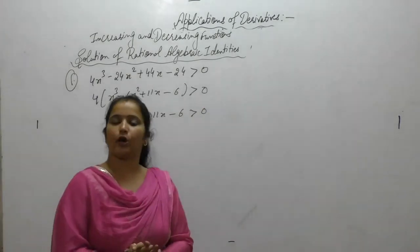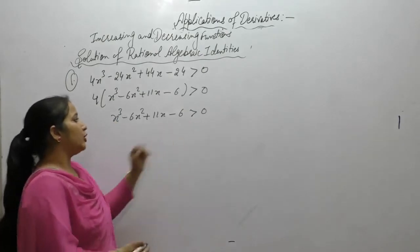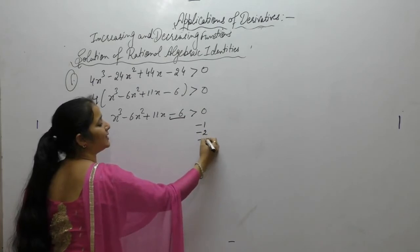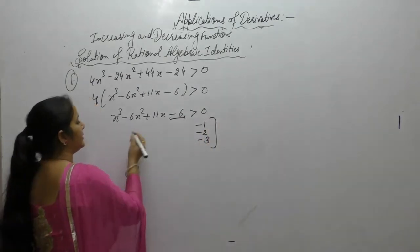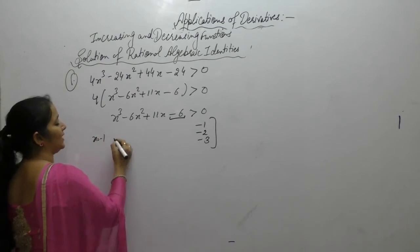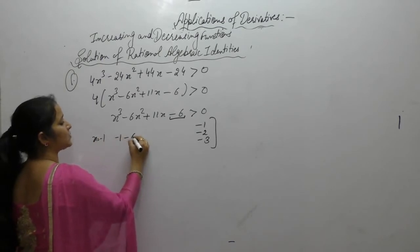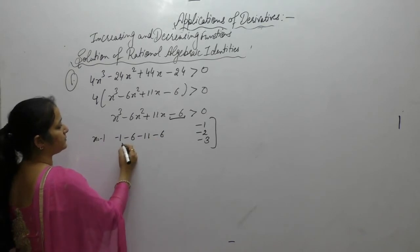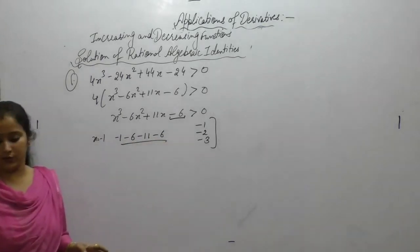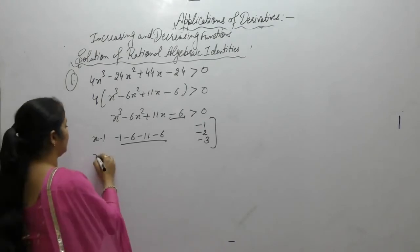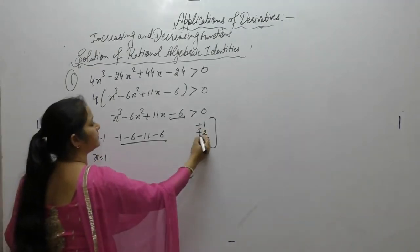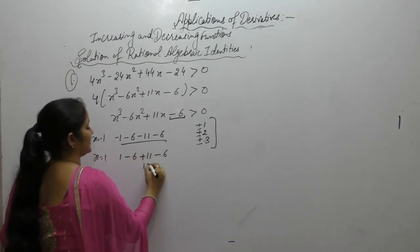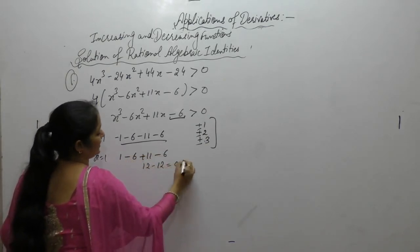This is a cubic polynomial. For a cubic polynomial, we check factors of minus 6: minus 1, minus 2, minus 3. Putting x as minus 1 gives all negative terms, so it is not a factor. Putting x as 1: 1 cubed minus 6 times 1 squared plus 11 minus 6 gives 12 minus 12 equals 0.